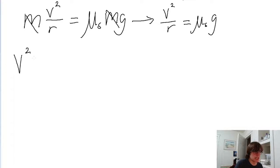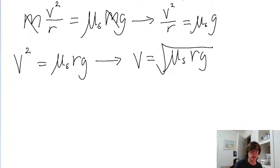So we multiply both sides of the equation by r. So v squared equals mu sub s rg. And then we solve for v by taking the square root of both sides. So v is equal to the square root of mu sub s rg.